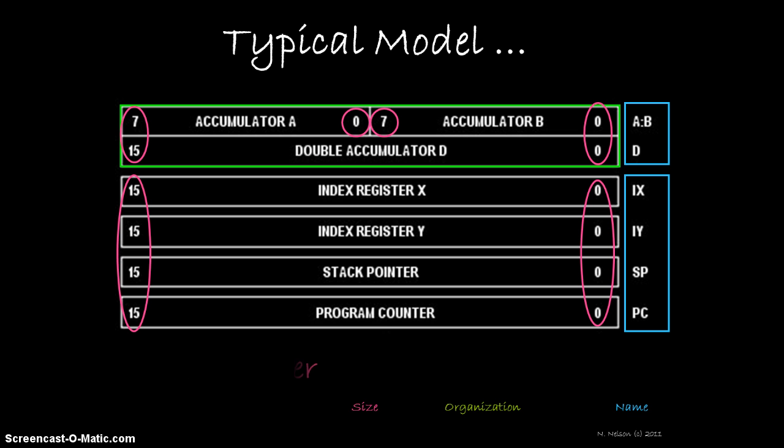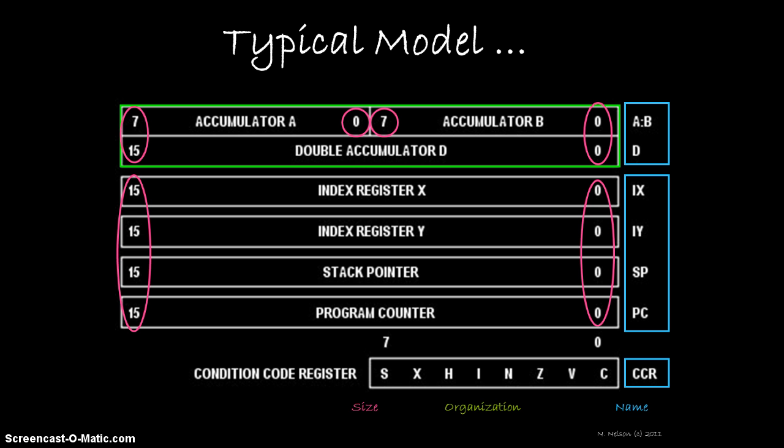As its name implies, the status register reports on the results or status of the last operation that was executed by the processor. Here it's called the condition code register, and you can see that each of the eight bits is treated separately.